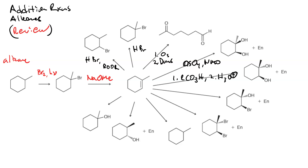We could also get the anti-diol by going through a halohydrin: first reacting with a halogen molecule in water to make the halohydrin, and then reacting it with excess hydroxide.